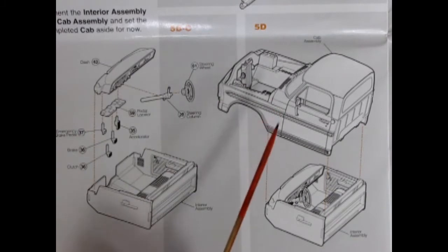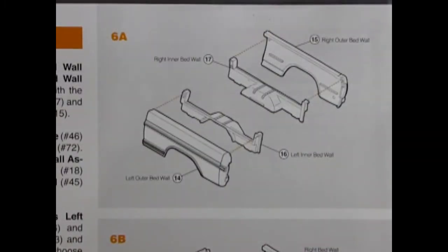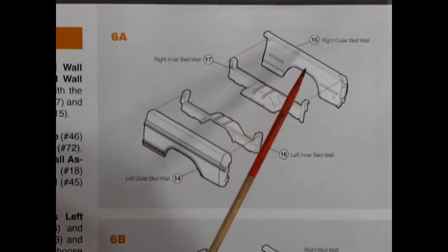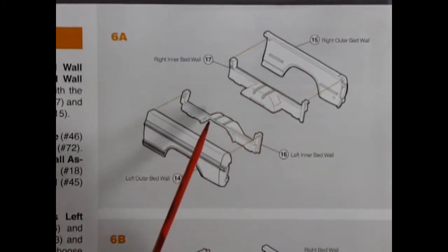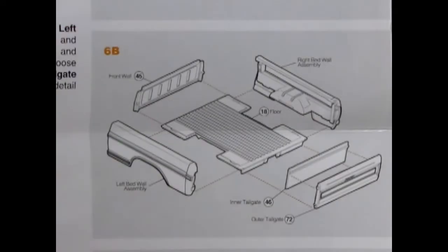And now we get into the components that make up our truck bed with our right outer bed walls and the inner bed wall. The bed walls have to go somewhere so we can glue them to the floor, the front wall, and we've got a two-piece tailgate here which also glues on to make one big unit.